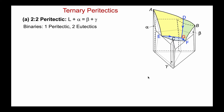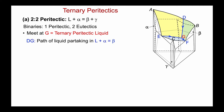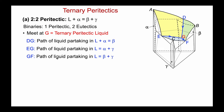This is the alpha liquidus surface — if the composition hits this, the first phase to crystallize would be alpha. Similarly, this is the beta primary phase field and this is the gamma primary phase field. The various liquids emanating from the three binaries are: DG, where D is the peritectic liquid in AB; EG, the eutectic valley out of AC associated with liquid in equilibrium with alpha plus gamma; and GF, associated with liquid in equilibrium with beta plus gamma.